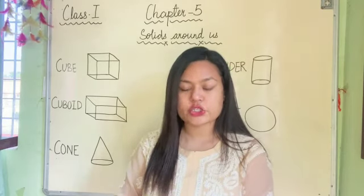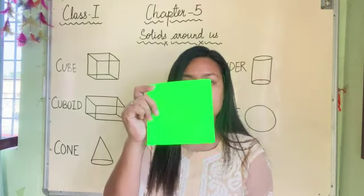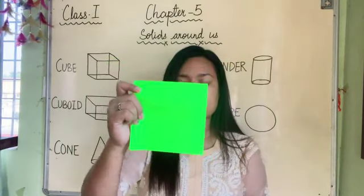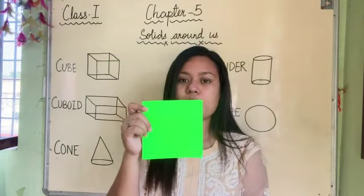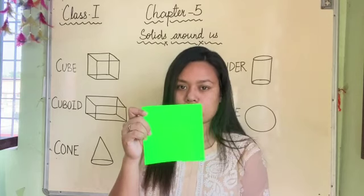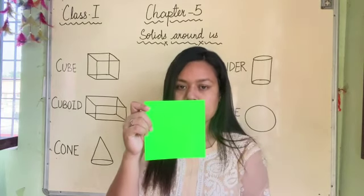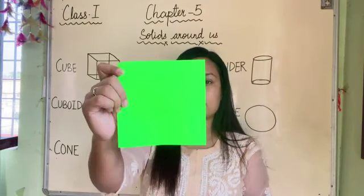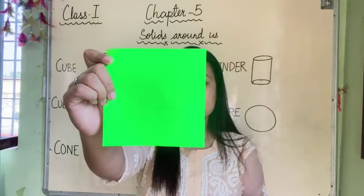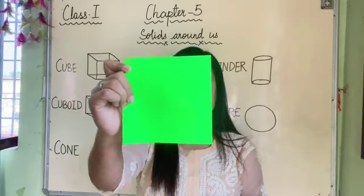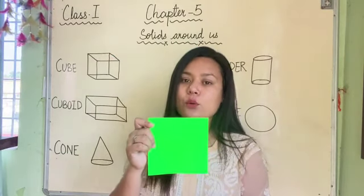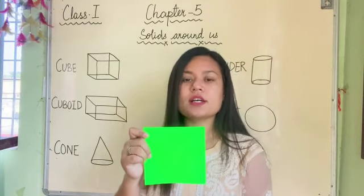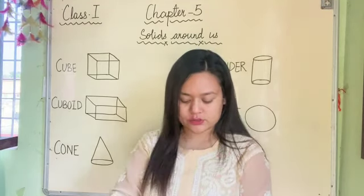Now, next shape. Which shape is this? In this shape, all the sides are equal. Can you guess which shape is this? It is square. Very good. Which shape, children? Square. Very good.